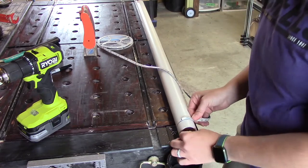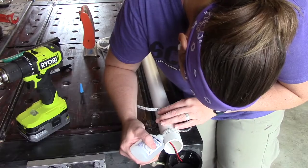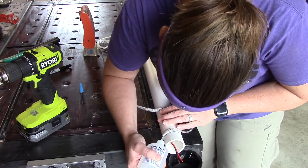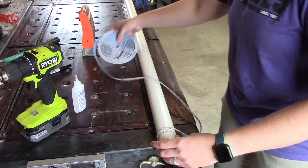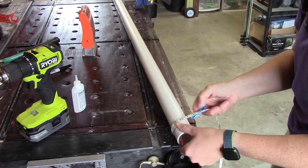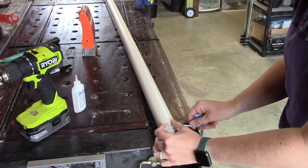We are then going to wrap the light around the PVC pipe. Some of the lights come with a sticky backing. I don't want to trust that. I'm also using CA glue after every so many wraps around the PVC.